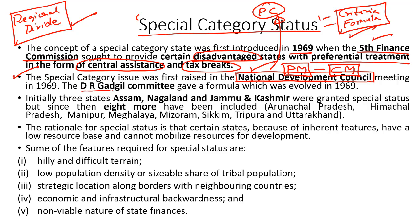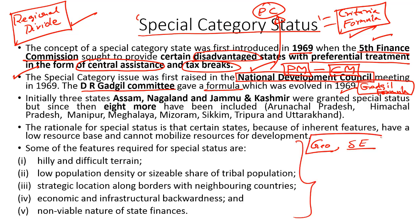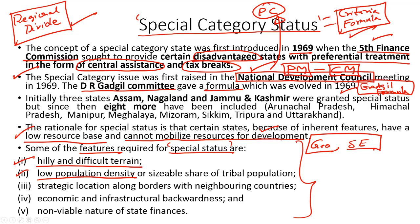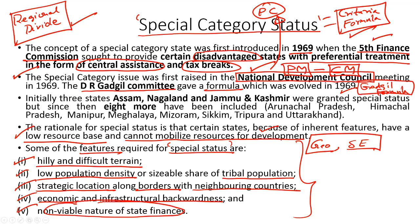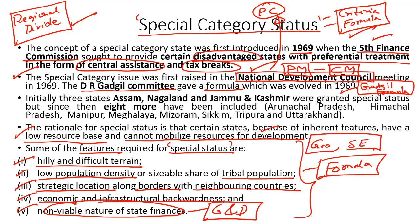The then Planning Commission, headed by Mr. Gadgil, came out with a formula popularly referred to as the Gadgil formula. According to this formula, states which have a geographical disadvantage and socio-economic disadvantage should be provided preferential treatment because these states have a very low resource base and cannot mobilize adequate resources for growth and development. The features needed for categorization under the special category status included the presence of hilly and difficult terrain, low population density or a significant tribal population, a strategic location along international borders, economic and infrastructural backwardness, and inadequate finances to promote growth and development.